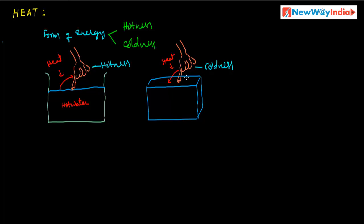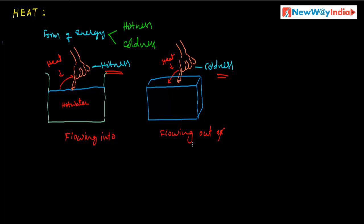So, what do you observe here? Heat is flowing — it moved into the finger in the hot water case, and heat energy moved out of the finger in the ice case. That is why we feel hotness and coldness. Hotness or coldness basically indicates whether heat energy is flowing into our body or out of it. These two terms are relative terms.